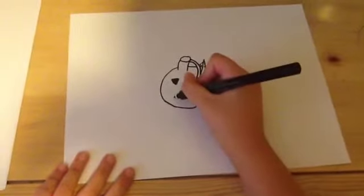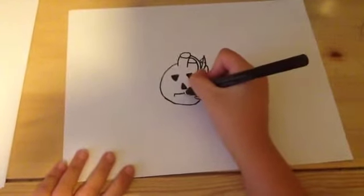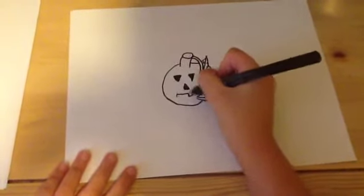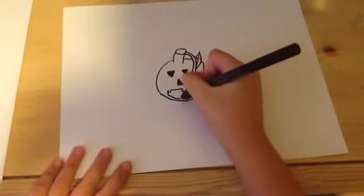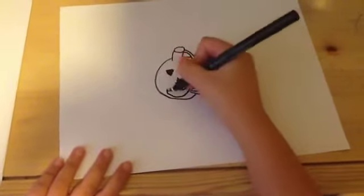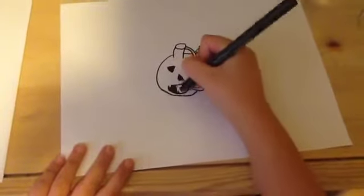And then you could do a mouth that looks like this, kind of knock out teeth, and then just make it smile and color the smile in.